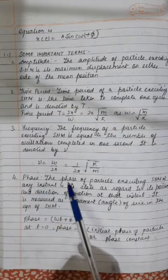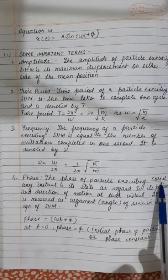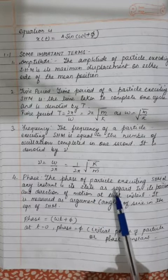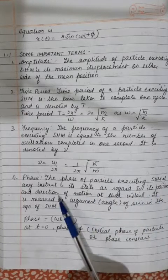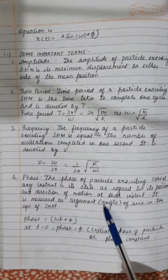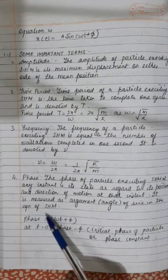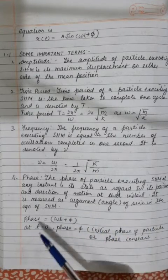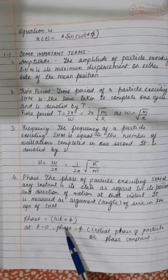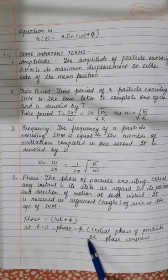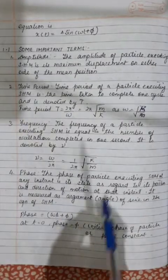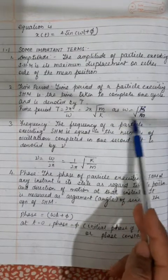Next is phase. The phase of a particle executing simple harmonic motion at any instant is its state with regard to its position and direction of motion at that instant. It is measured as the argument or angle of the sine function in the SHM equation: phase = ωt + φ. At t = 0, phase = φ, which is the initial phase or phase constant. Correction: ω = √(k/m).